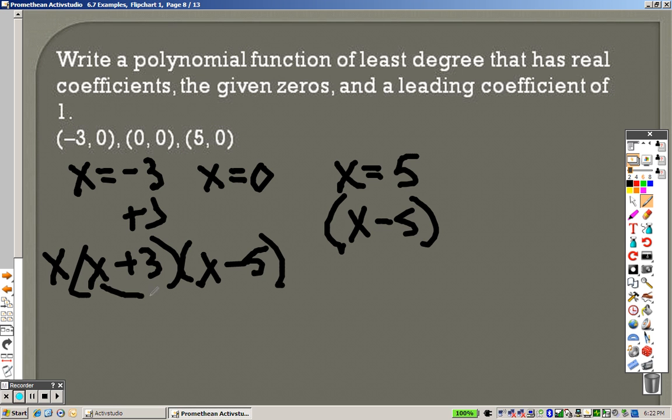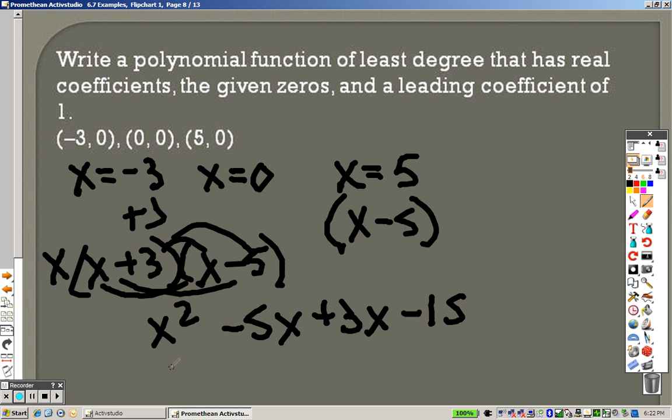So this is what I'm supposed to basically distribute. I am going to quickly put this through. x squared minus 5x plus 3x minus 15. And when I combine it together, I get x squared minus 2x minus 15.